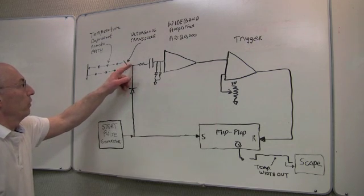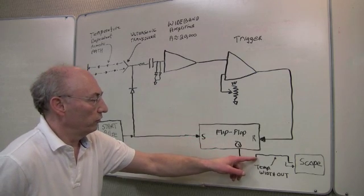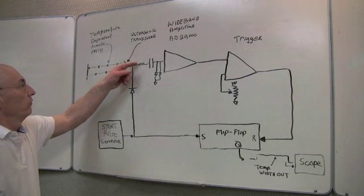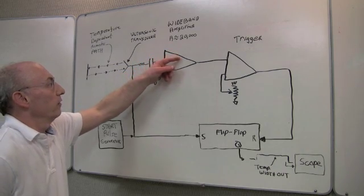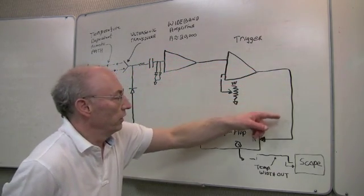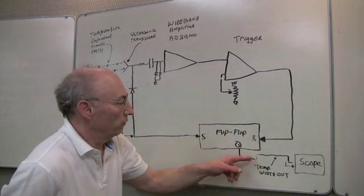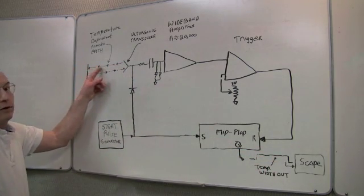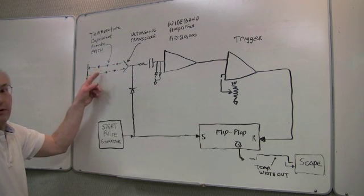At the same time we launch the pulse, we set a flip-flop, which sets an output pulse width high. When the pulse returns, it's very small, but we have a great deal of wideband gain here, which goes through a trigger and resets the flip-flop, ending the pulse width. The pulse width is proportional to the delay time down the acoustic temperature path and variation due to temperature.